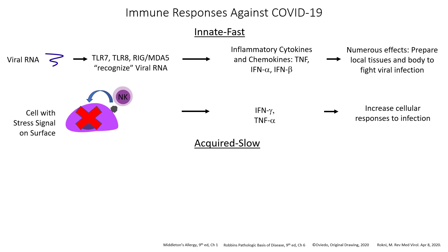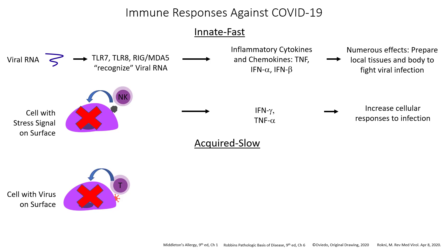Acquired immunologic reactions are slow and can take days in order to come into effect. The first one reacts against the cell that has the virus on the surface. A T cell is a type of lymphocyte that can recognize these viral antigens on a cell surface and then kill the cell. The virus particles may have antibodies produced by B cells which bind to them. This, of course, can take days to come into effect.